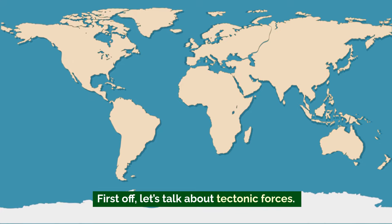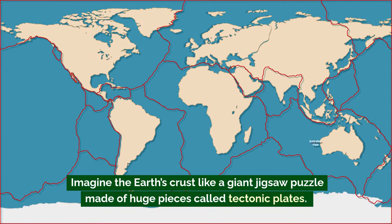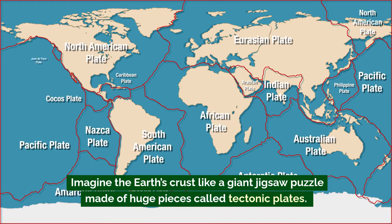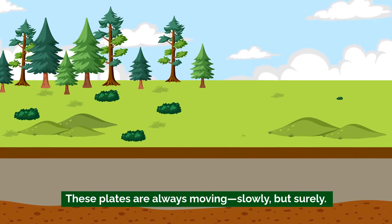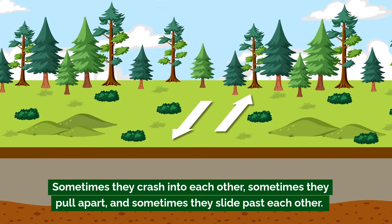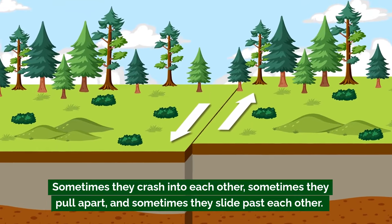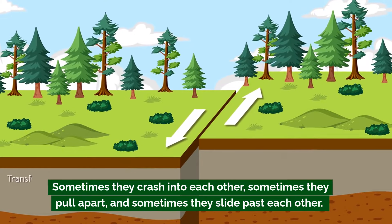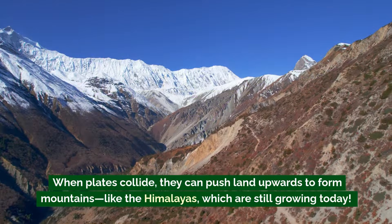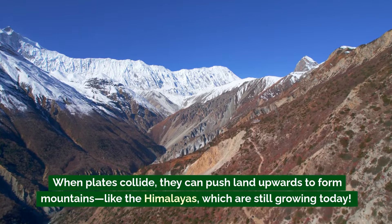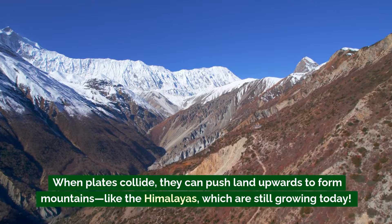First off, let's talk about tectonic forces. Imagine the earth's crust like a giant jigsaw puzzle made of huge pieces called tectonic plates. These plates are always moving — slowly but surely. Sometimes they crash into each other, sometimes they pull apart, and sometimes they slide past each other. When plates collide, they can push land upwards to form mountains, like the Himalayas, which are still growing today.